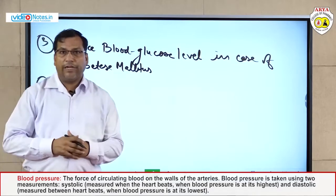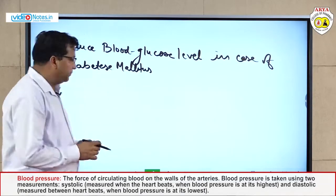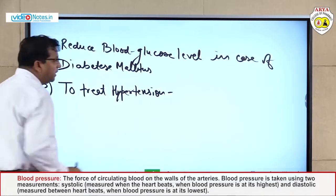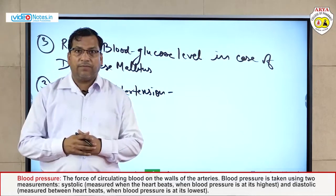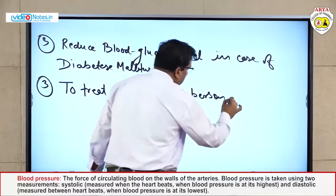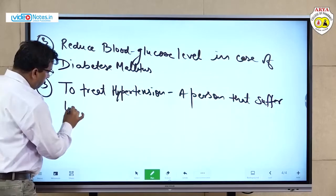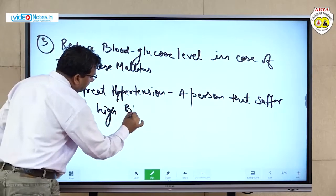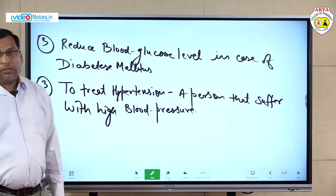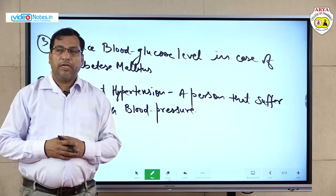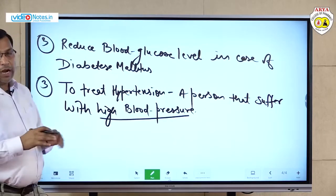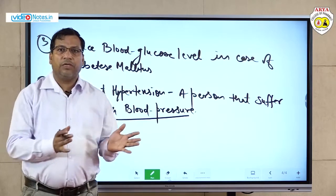Coriander is also very useful to treat hypertension, meaning high blood pressure. Nowadays many persons suffer with blood pressure problems. This high blood pressure will be reduced to normal level by the extract of coriander.